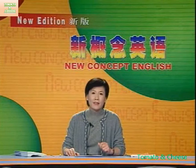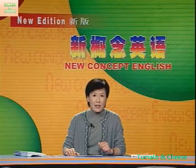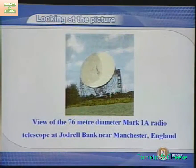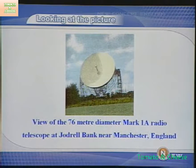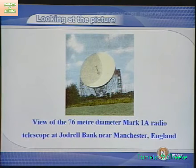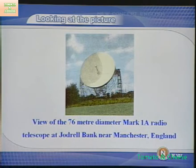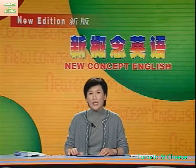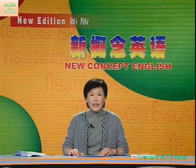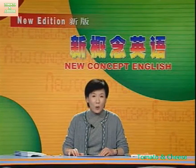今天我们要谈论关于预报天气的难处。照片上这个像锅子一样的东西叫射天望远镜，它是用来接收和记录来自天体和宇宙空间其他物体的无线电波。根据这些记录，气象专家可以预测天气。有这样先进的设备，预测天气还困难吗？